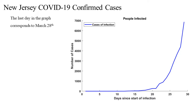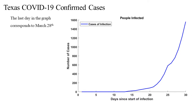Here is a graph of the number of confirmed cases for New Jersey, with the last day corresponding to March 28th. As you can see, there are almost 7,000 confirmed cases. Here is a graph for Texas. The number of confirmed cases for the last day, which corresponds to March 28th, is near 1,600 cases.